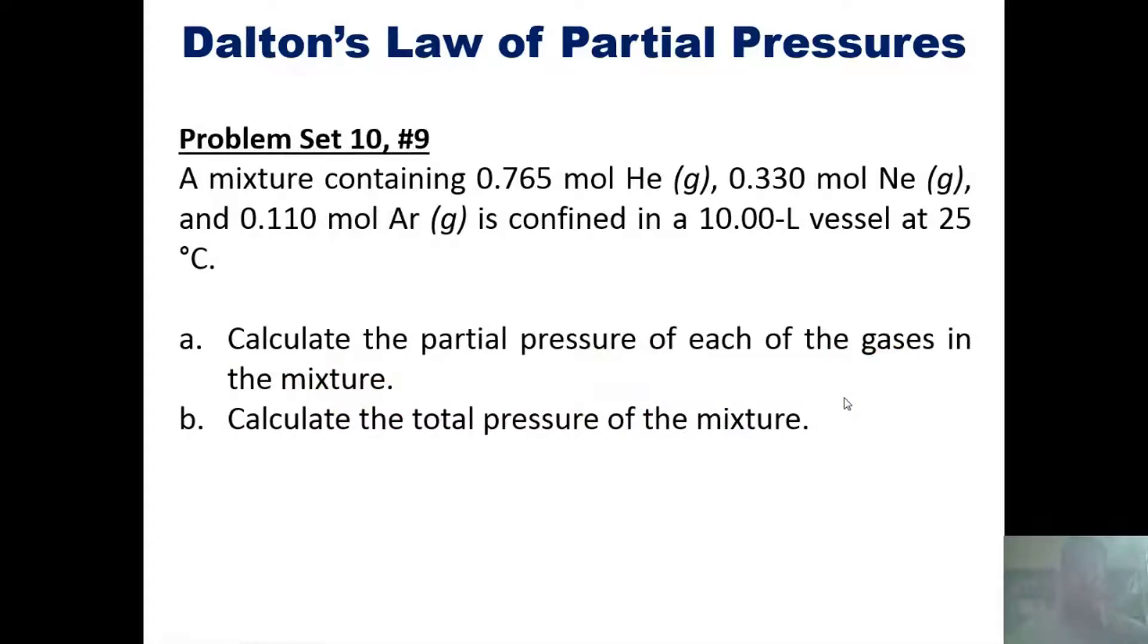A mixture containing 0.765 moles of helium, 0.330 moles of neon, and 0.110 moles of argon is confined to a 10-liter vessel at 25°C. Calculate the partial pressure of each gas in the mixture and calculate the total pressure of the mixture. Once again, I'm not doing this here, but you can click the link to see it done elsewhere.